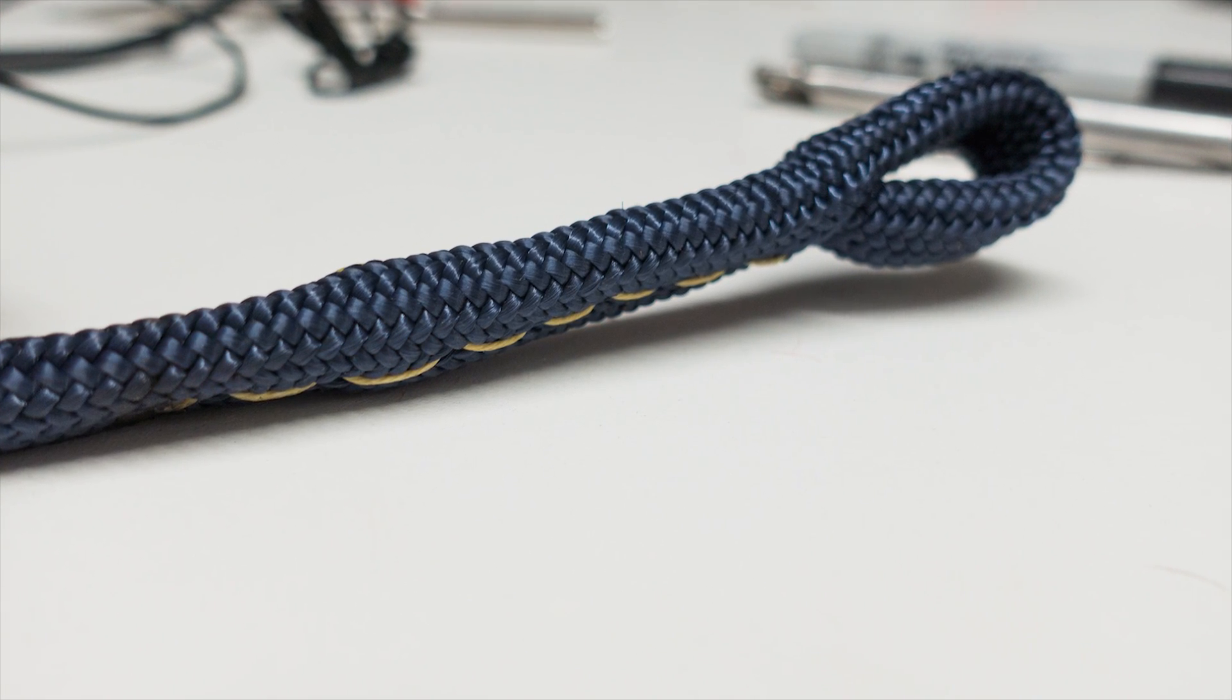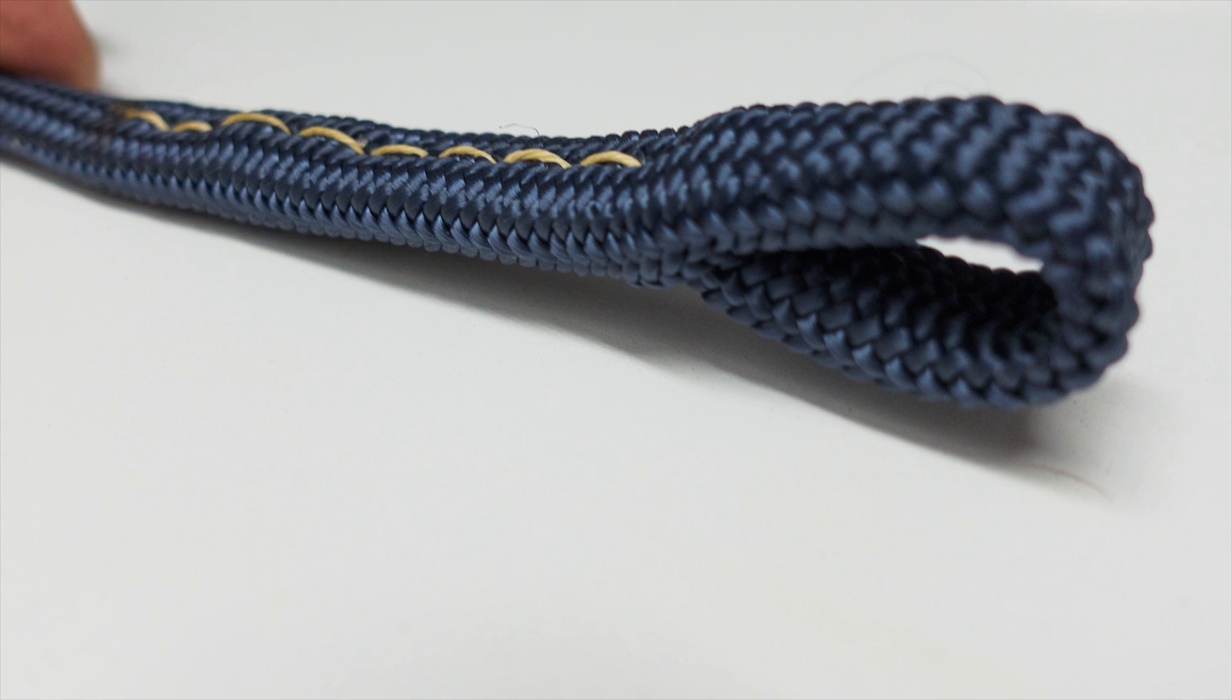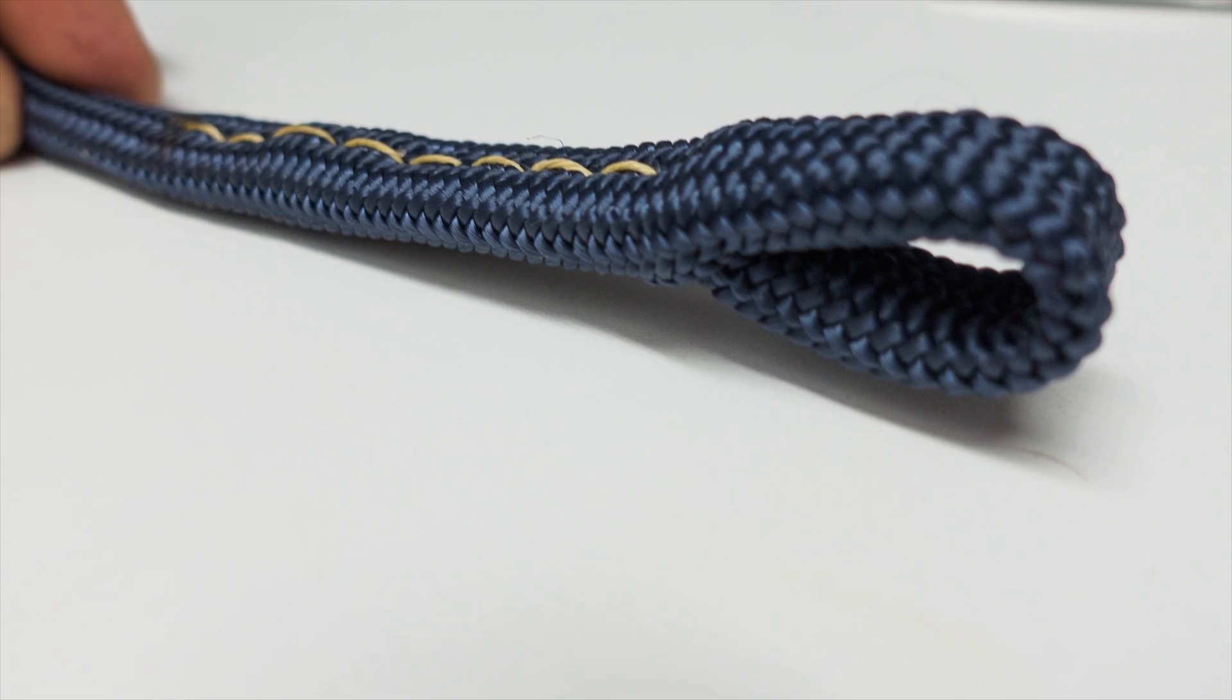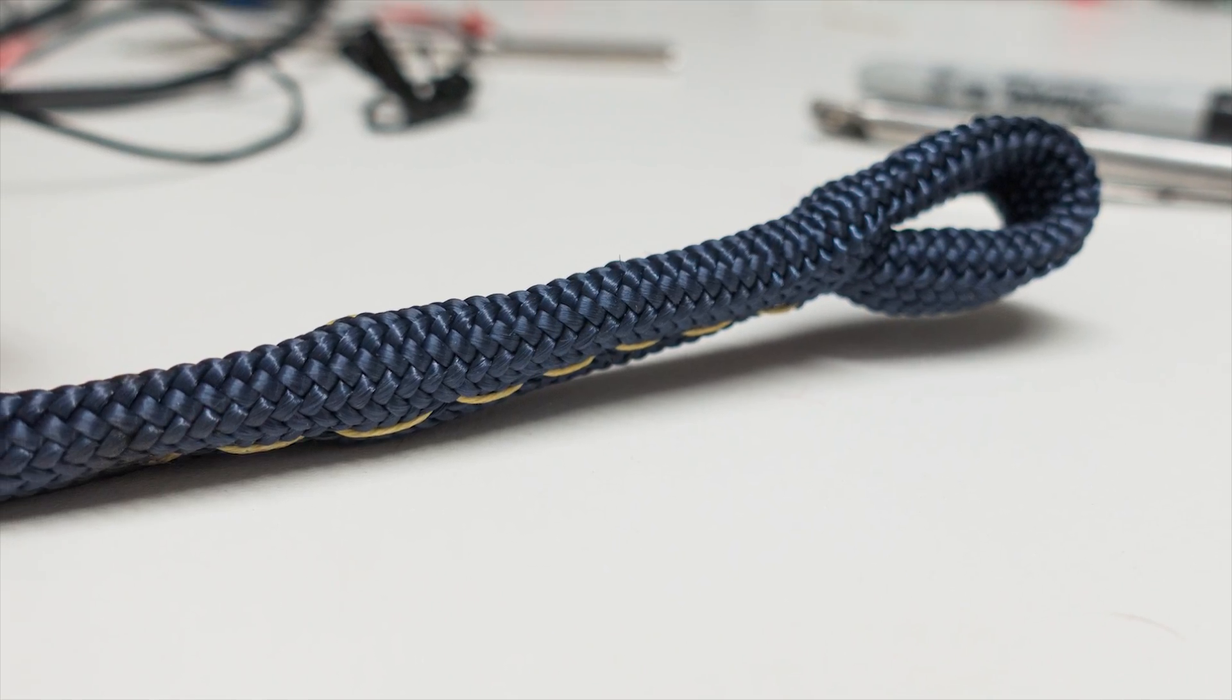In this video we're going to splice a reaving eye into the end of a new halyard. This is a low strength eye which allows the halyard to easily be attached to a feed line.